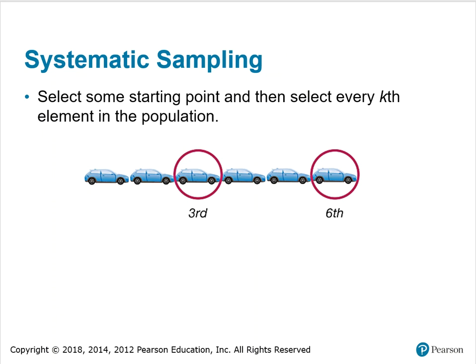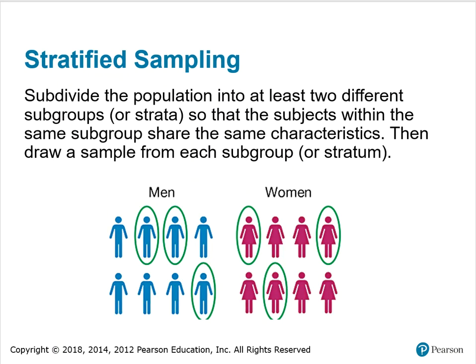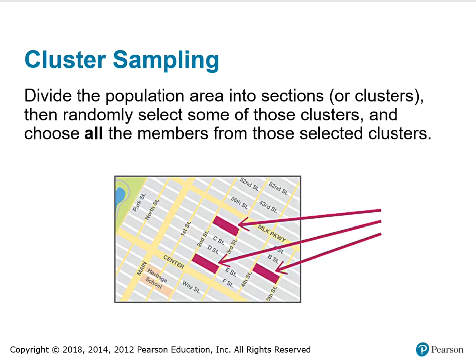Some other sampling techniques: systematic sampling, where you select some starting point and then select every kth element in the population. Convenient sampling is when you sample data that is very easy to get. Stratified sampling is when you subdivide the population into at least two different subgroups, or strata, so that subjects within the same subgroup share the same characteristics, then draw a sample from each subgroup or stratum. Cluster sampling is when you divide the population area into sections or clusters, then randomly select some of the clusters and choose all of the members from those selected clusters.